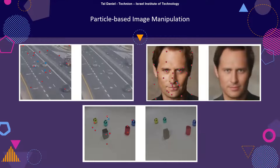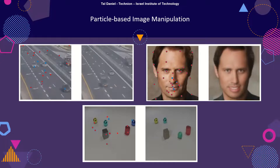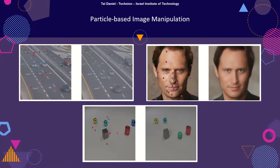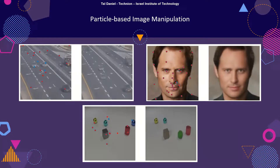DLP is a generative model that allows modifying the image in an intuitive way by simply moving around the particles. We have implemented a graphical user interface to interact with the particles, moving them around and seeing the effect on the resulting reconstruction. In addition, the features of each particle can be modified to change its appearance. Note that DLP is data-driven — the particle semantics are learned from the data. For face images, moving the particle on the nose only modifies the shape of the nose, while for the traffic data, moving the particle on the car changes the position of the entire car.